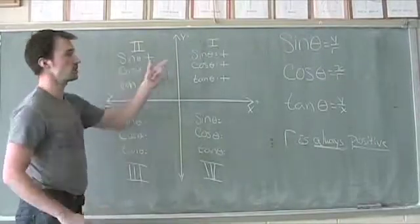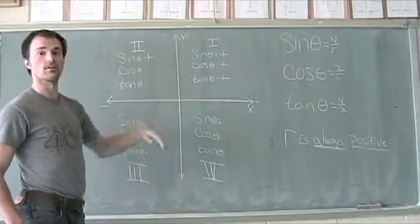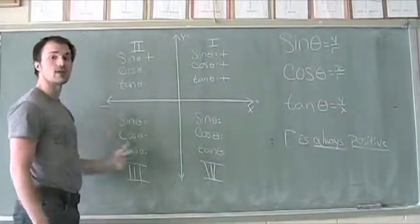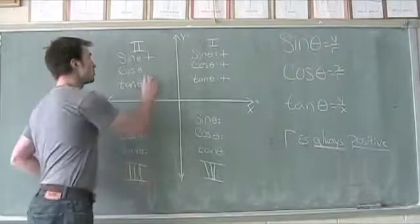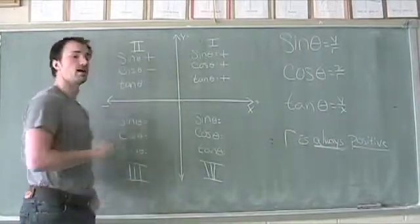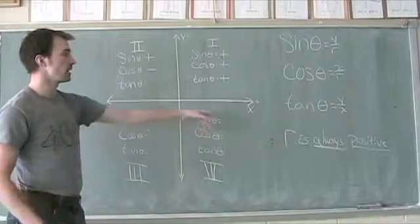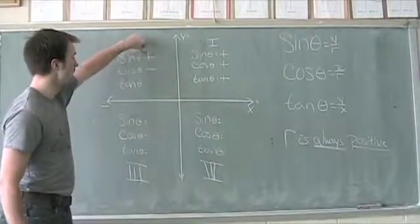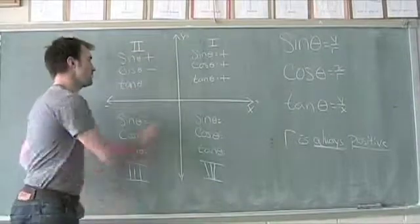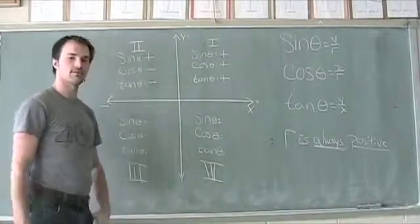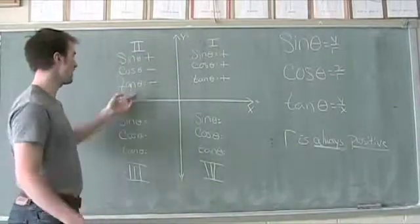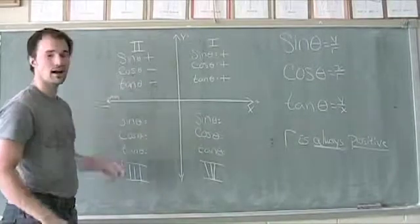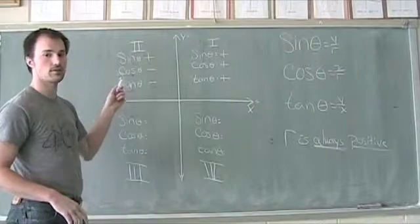Now cosine is our x value divided by r. R is always positive, but we now have a negative x divided by a positive r, so cosine theta is negative. Tangent is y divided by x, or sine divided by cosine — positive divided by a negative — which gives us a negative number. So in quadrant 2 we have a positive sine, a negative cosine, and a negative tangent.